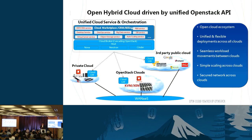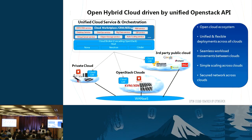These unified cloud brokers serve as the unified API entry point regardless of the cloud backend type, sharing the same service catalog, service orchestrations, and uniform OpenStack API exposures. Most importantly, quota management is unified for all tenants across underlying cloud resource providers. This enables flexible deployments across all clouds, seamless workload movements between clouds, easy cross-cloud scaling, and fully guaranteed security.